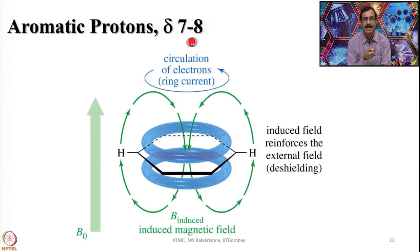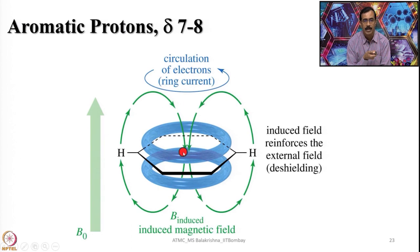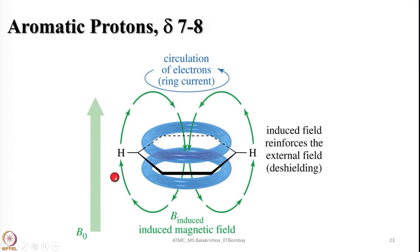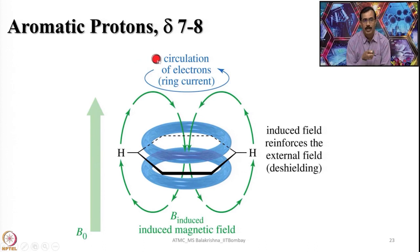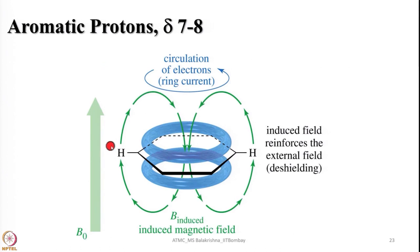Aromatic protons appear around δ 7–8 because when benzene is placed in the applied magnetic field, the induced magnetic field from circulation of delocalized electrons generates a ring current. This ring current generates a magnetic field aligned with the external field — reinforcing it — resulting in deshielding. The net magnetic field experienced is B₀ + Bᵢ, so the radio frequency must be increased. This is why aromatic protons appear in the deshielded region at high frequency shift.